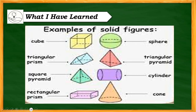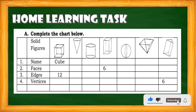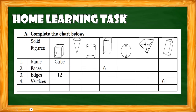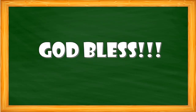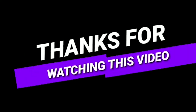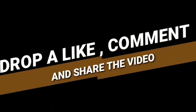In summary, examples of solid figures include the cube, triangular prism, square pyramid, rectangular prism, sphere, triangular pyramid, cylinder, and cone. For your home learning, complete the chart by identifying the name, number of faces, edges, and vertices of each figure. You may comment your answers in the comment section below. Thank you and God bless everyone.